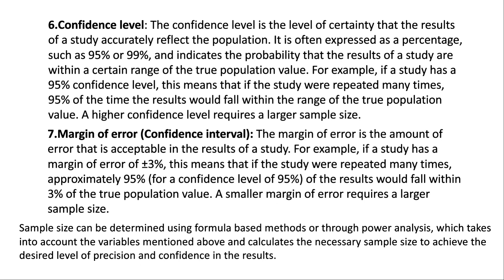For example, if a study has a 95% confidence level, this means that if the study were repeated many times, 95% of the time the results would fall within the range of the true population value. A higher confidence level requires a larger sample size.